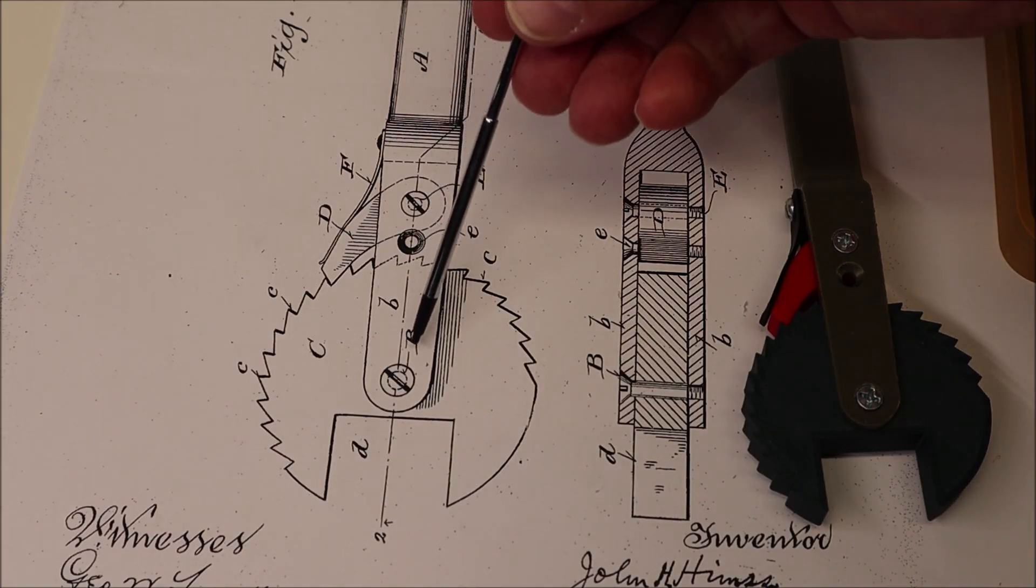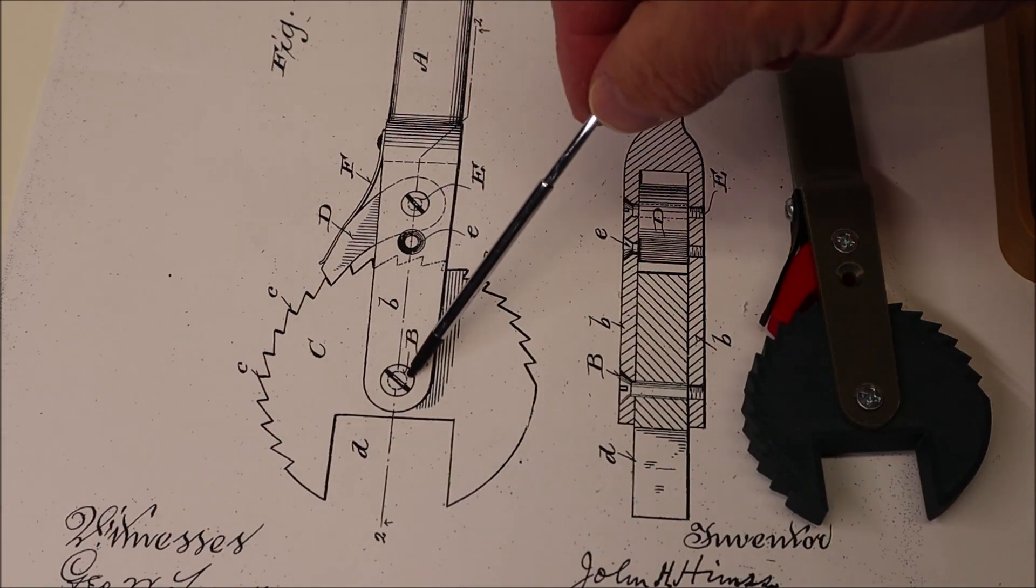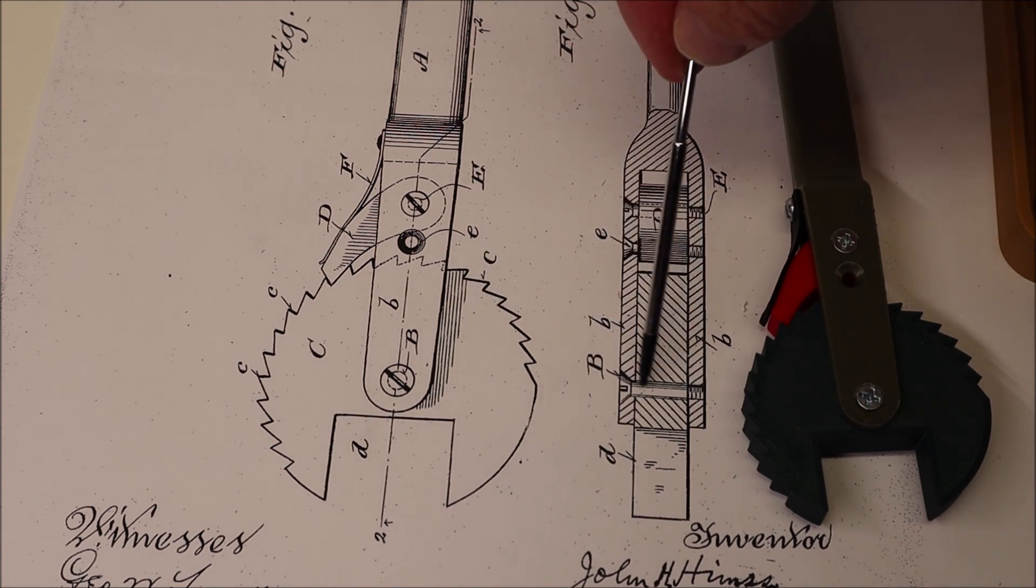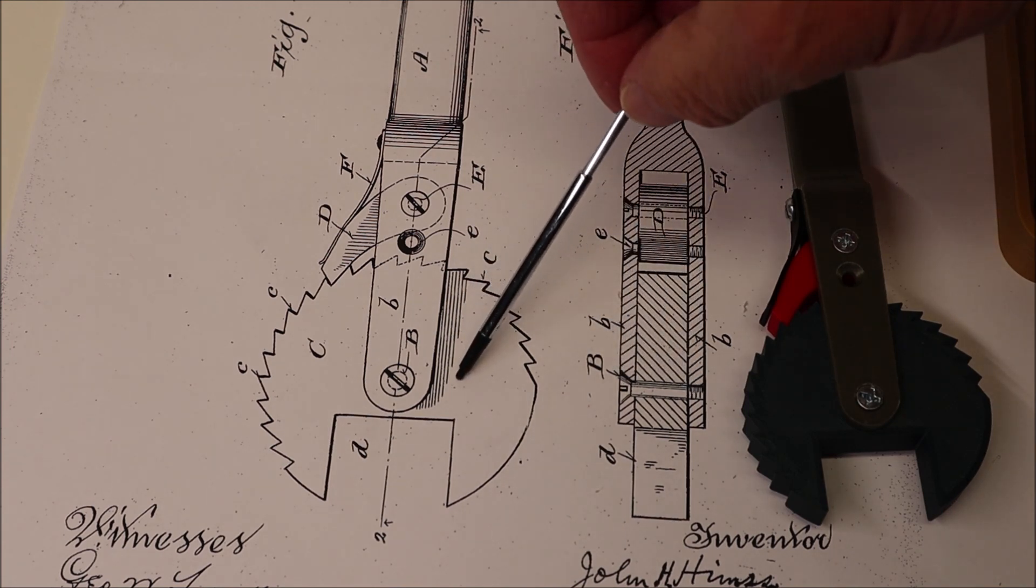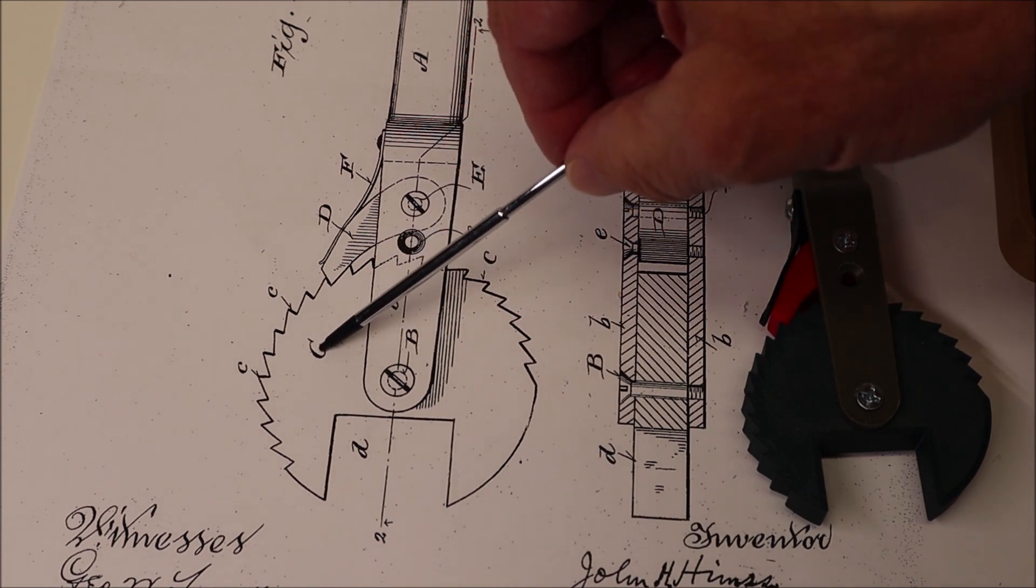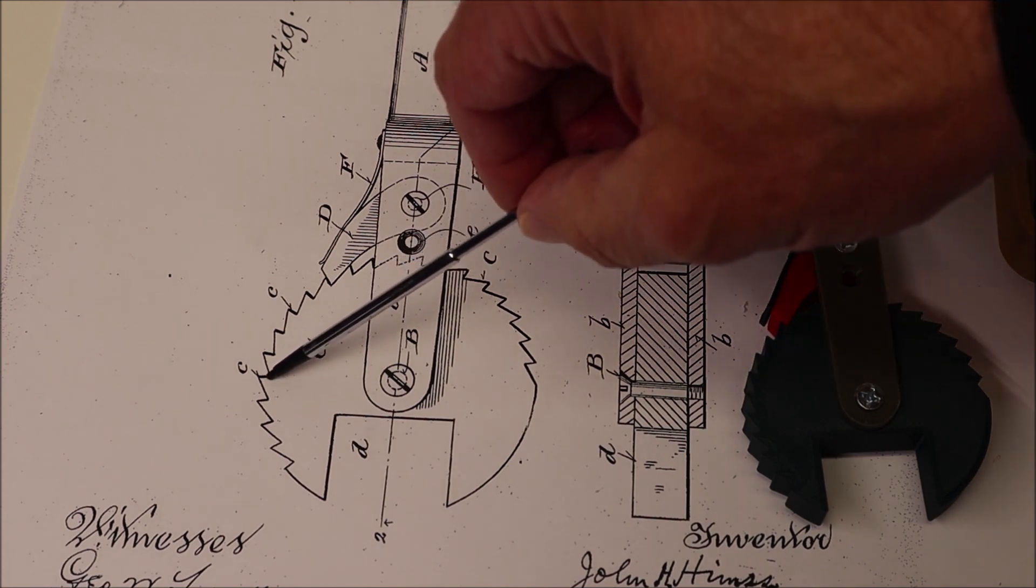Point B on the wrench is this screw that connects to the two forks of the wrench and holds in place this disc C with these ratchet teeth.